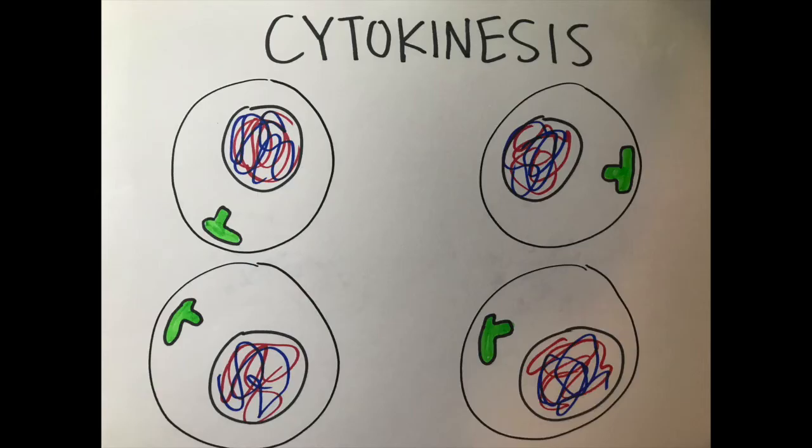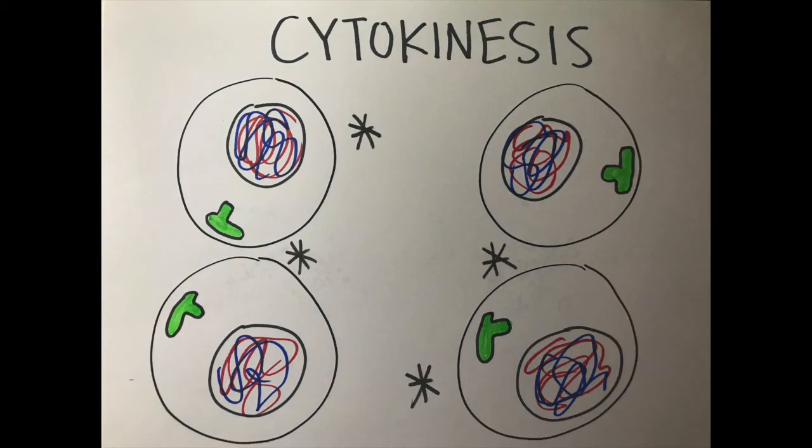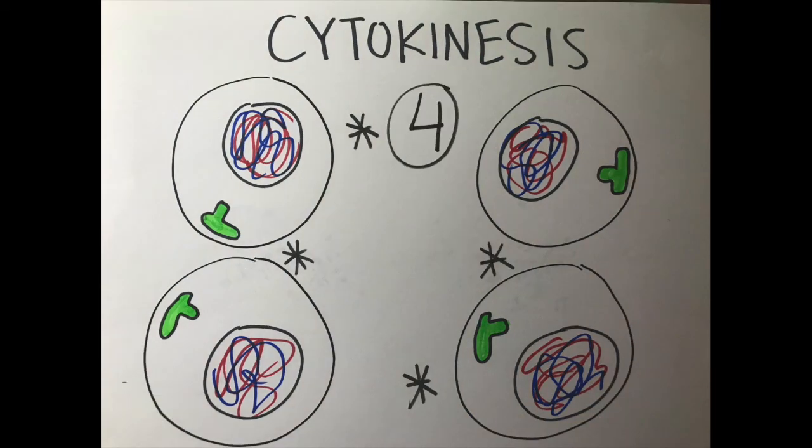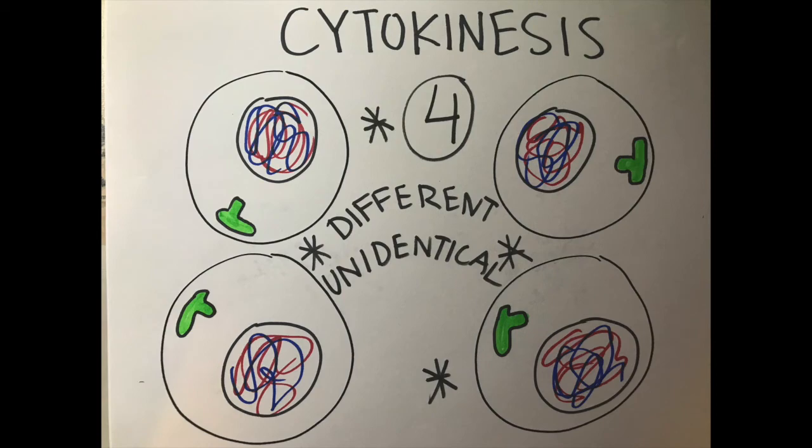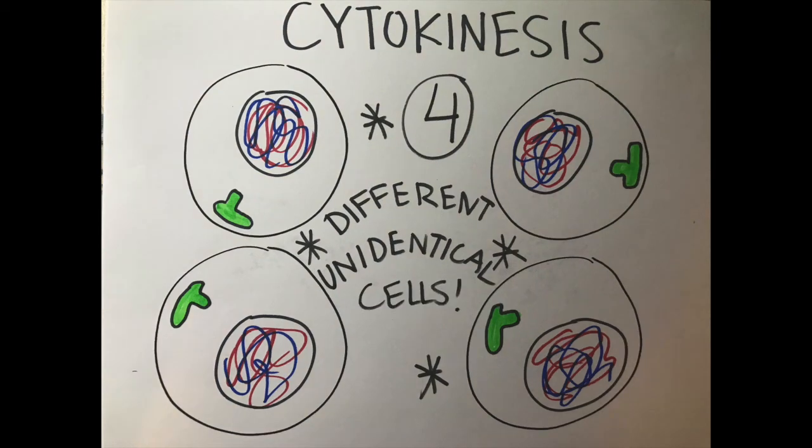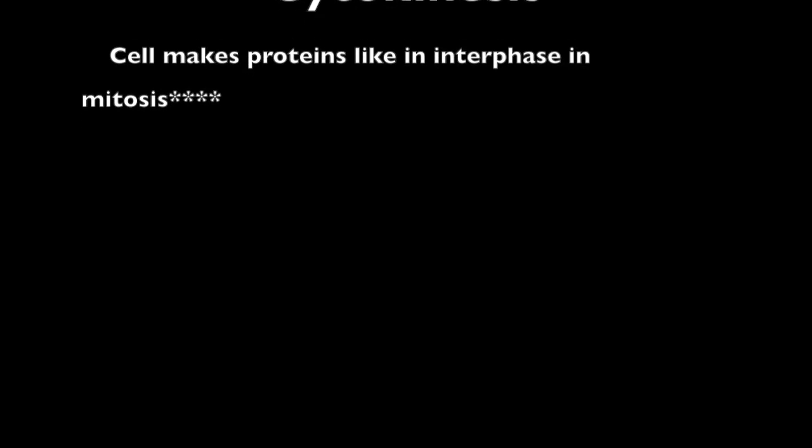In cytokinesis, the last phase, the cell divides into two, which means that there will be four daughter cells in total that are not genetically identical to the parent cell. The cell will grow and make proteins like interphase in mitosis.